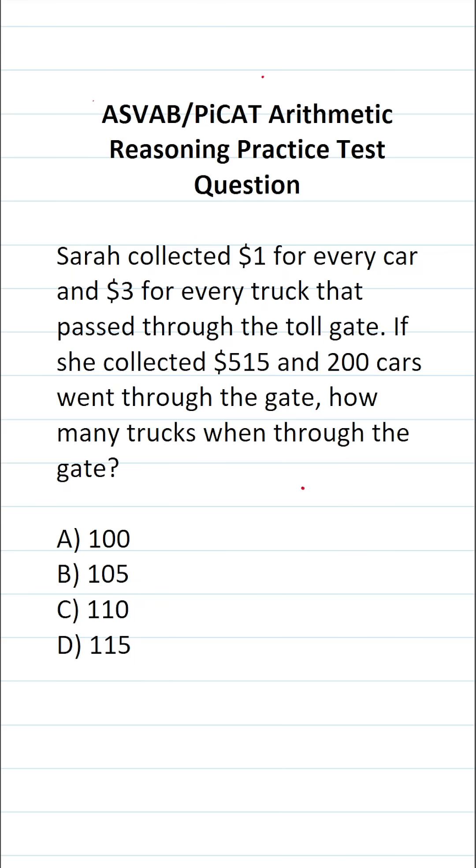This arithmetic reasoning practice test question for the ASVAB and PiCAT says, Sarah collected $1 for every car and $3 for every truck that passed through the toll gate. If she collected $515 and 200 cars went through the gate, how many trucks went through the gate?